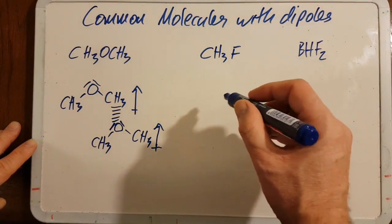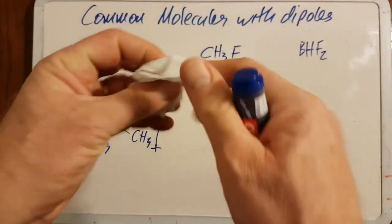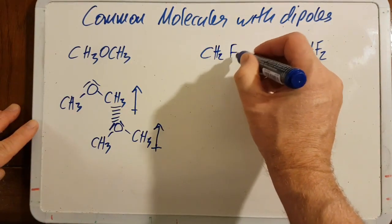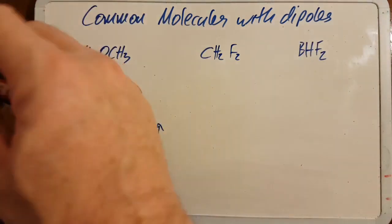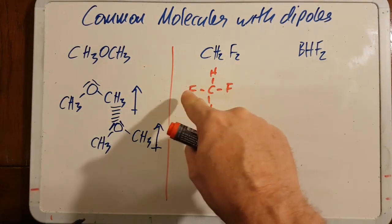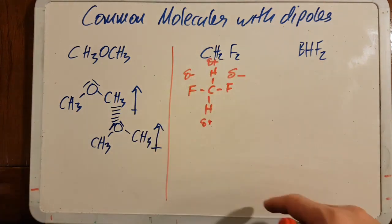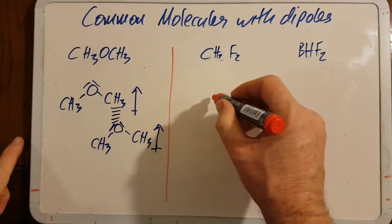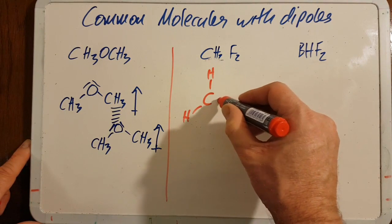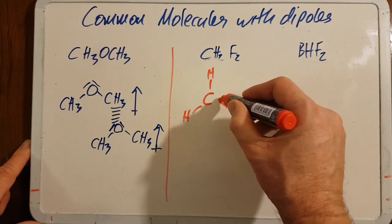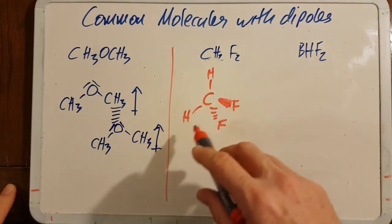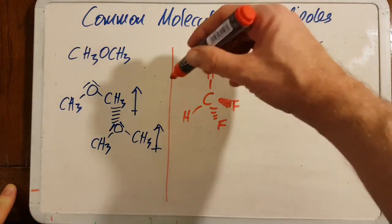Onto this one: fluoromethane—actually, let's make that trickier—difluoromethane (CH2F2). So I'm going to draw this out incorrectly; see if you can spot what's wrong. So in 3D you can see now that this tetrahedral shape actually has a dipole going in this direction.